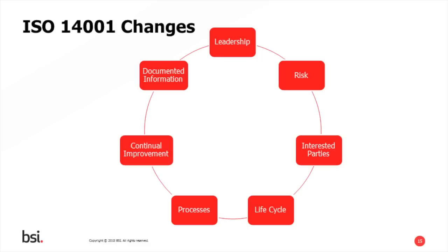There's also a greater emphasis on the integration of the environmental management system with the strategic direction of the organisation. All organisations, whether large, medium, or small, have direction and a strategy — for growth, for retention of customers, or to diversify into new markets. The management system should be part of that strategic direction and certainly not something separate. If it's separate, what we end up with is a management system that sits on a shelf. Within leadership, we should be looking for more visible and more active integration of leadership within the management system itself, with a greater emphasis on top management demonstrating their leadership.